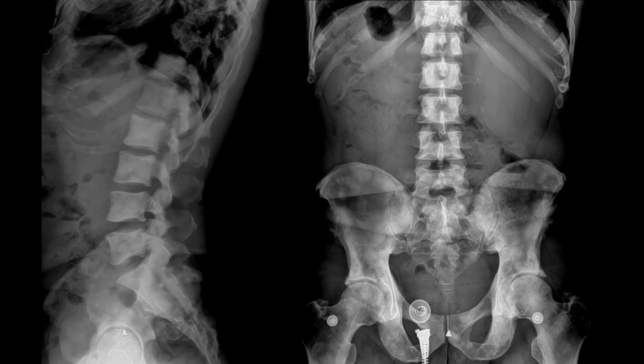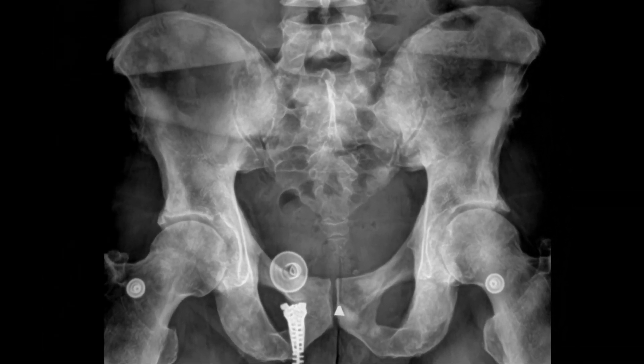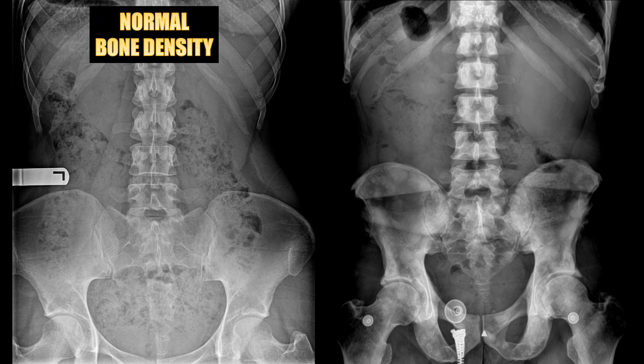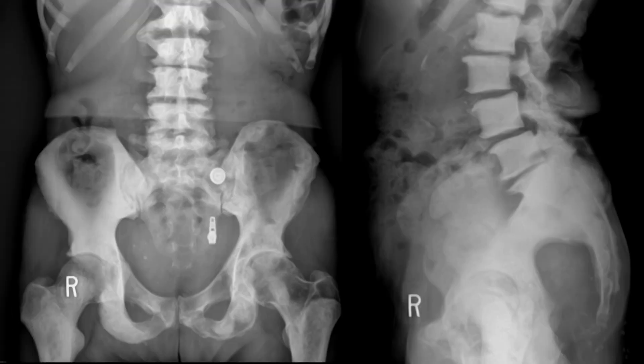Let's look at these X-rays of an individual with diffuse blastic metastasis and focus on the bone density. As we zoom into the pelvis, you should see patchy areas of increased density. In this example we can see diffuse blastic metastasis throughout the lumbar spine and pelvis. Compare the pelvis side by side, then look at the overall dense homogeneous appearance of the lumbar spine.